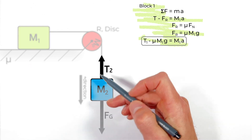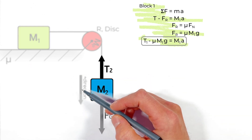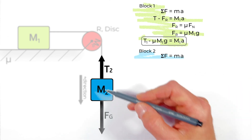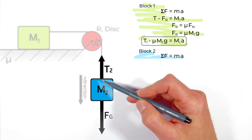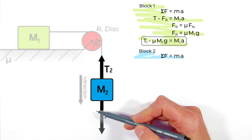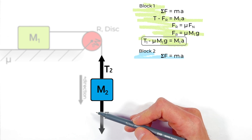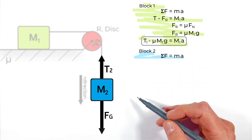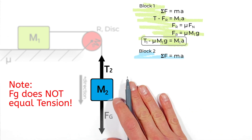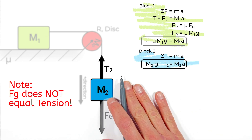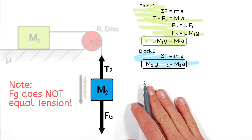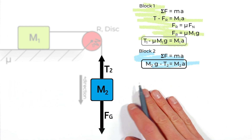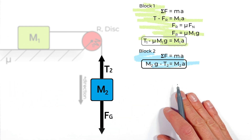Next, we look at the hanging block and apply Newton's second law to it. The free body diagram of the hanging block shows the weight M2·G acting downward and the tension in the string acting upward. Plugging those into Newton's second law gives: M2·G minus T2 equals M2·A. Again, we have two unknowns — the tension and the acceleration.